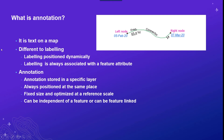Labeling is positioned dynamically and is always associated with a feature attribute — dynamically drawn and deconflicted on the screen every time you pan and zoom the map. Annotation is different. It's stored in its own specific annotation layer and is always positioned in the same place. It's a fixed size, optimized to a specific reference scale of the map. It can be independent — just text on the map — or it can be feature-linked, meaning if you change an attribute on a feature, that could update the text in your annotation.